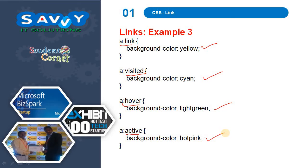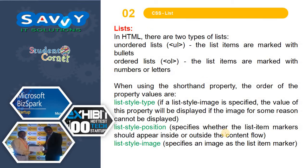Now we are moving to lists. In HTML there are three types of lists: unordered list, ordered list, and definition list.